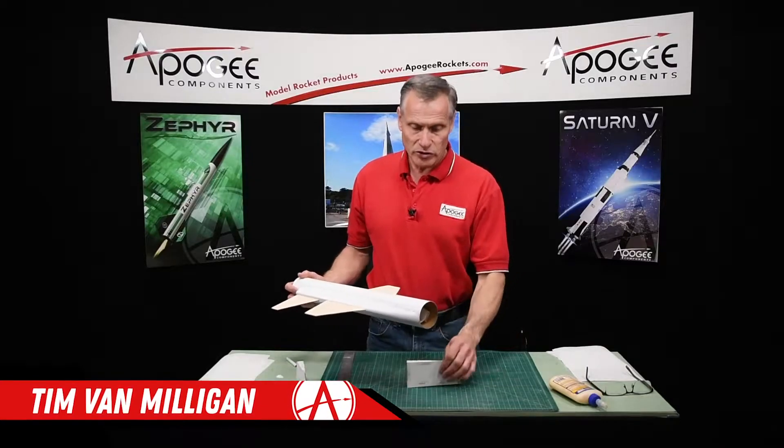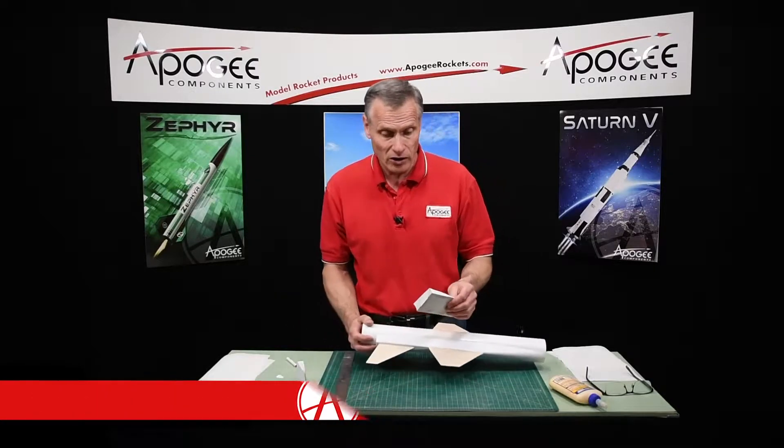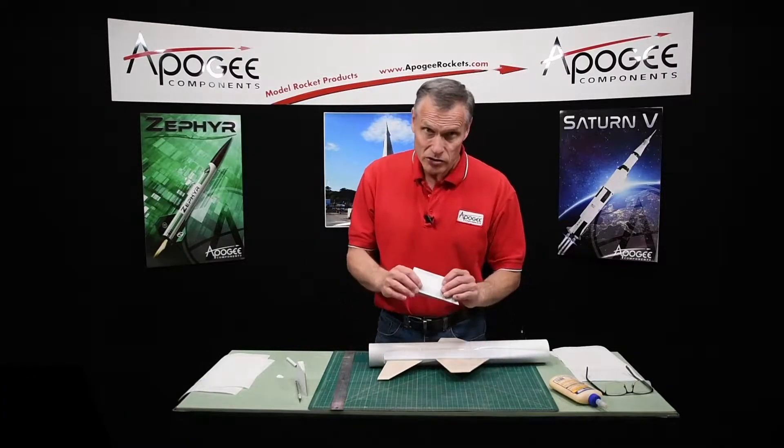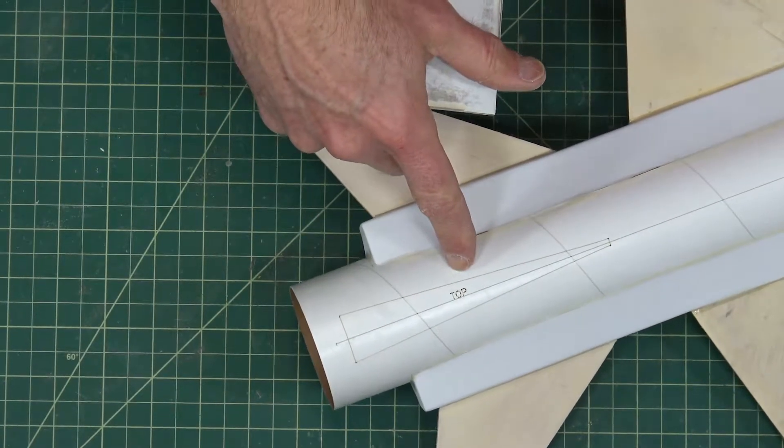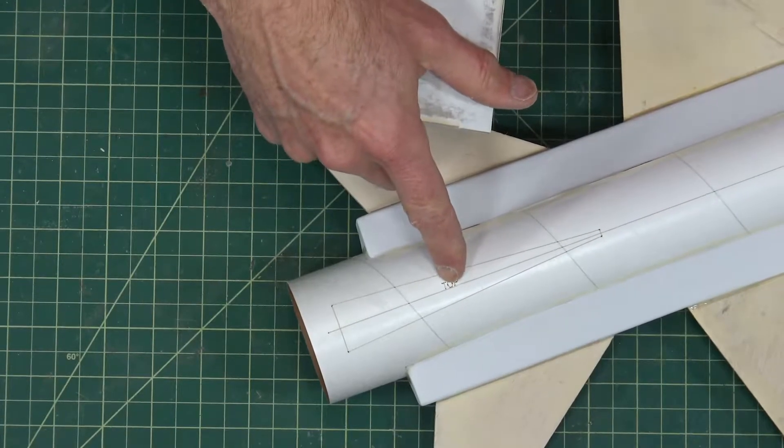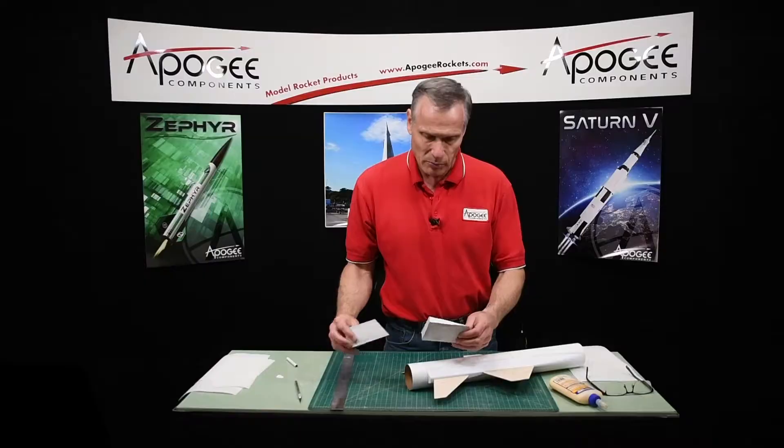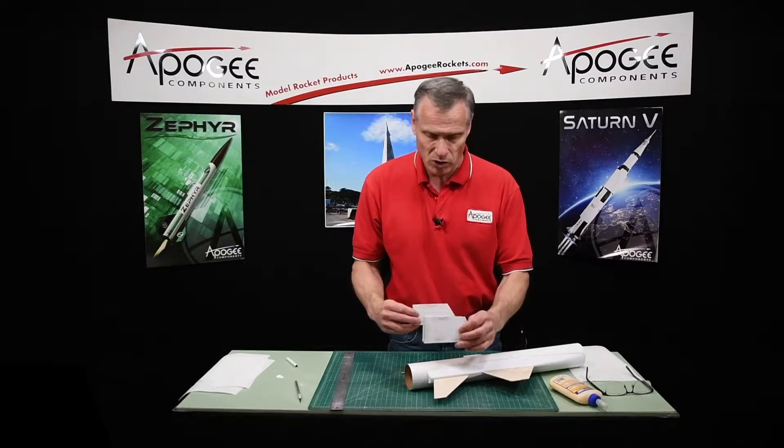In this step we're going to start installing the vertical tails. Now these are simply just glued on and the location is pretty easy because it's marked on the tube. So we have the top line and this is our top one because the top one is bigger than the smaller one.